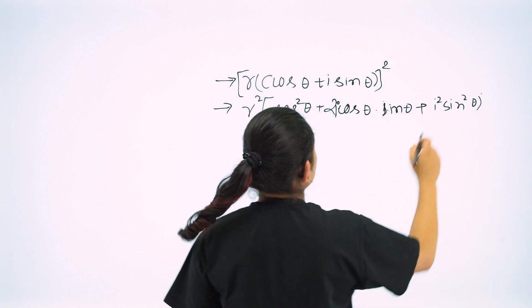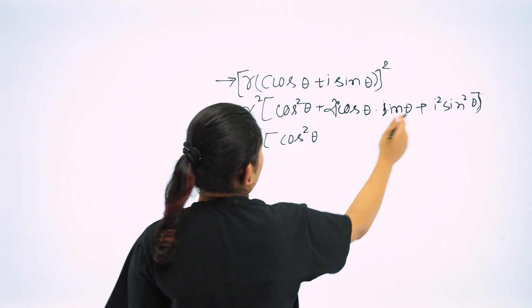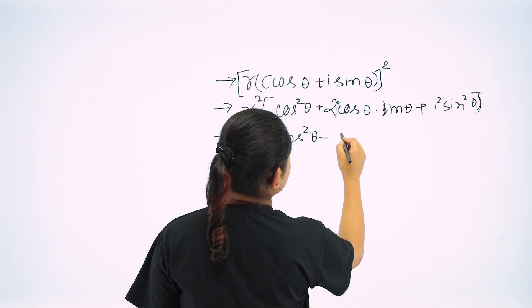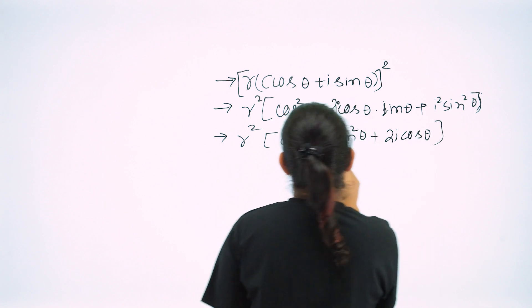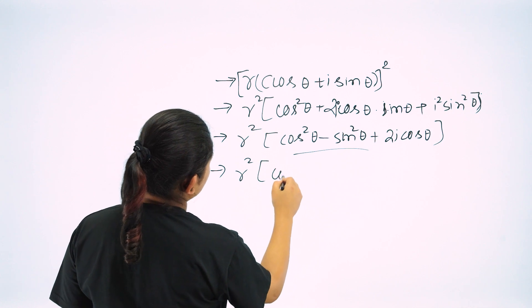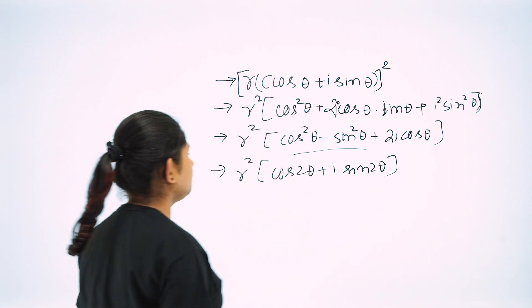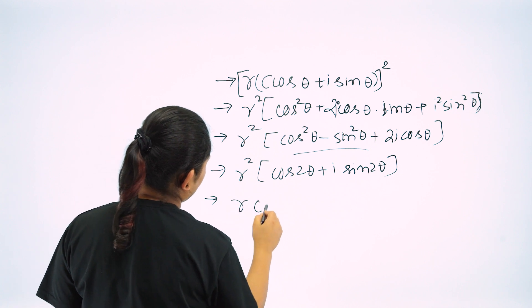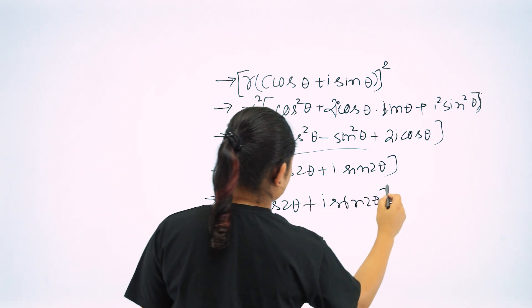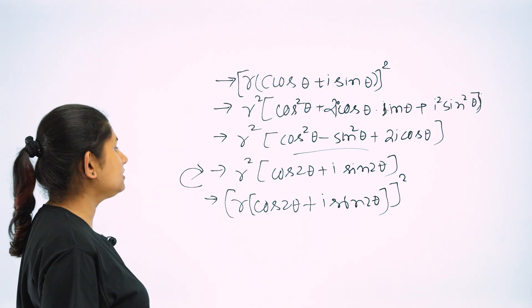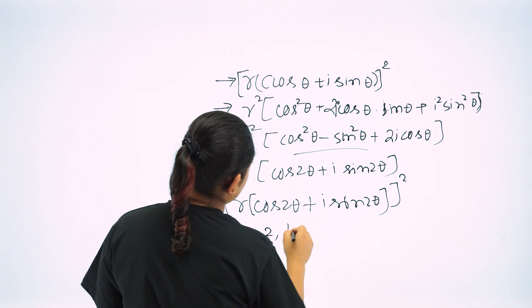Now what we can do is r square cos square theta, now i square is minus 1, so minus sin square theta plus 2i cos theta sin theta. This is r square times cos 2 theta plus i sin 2 theta. For n equal to 2 it works.